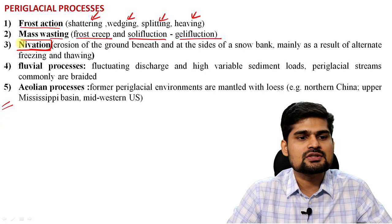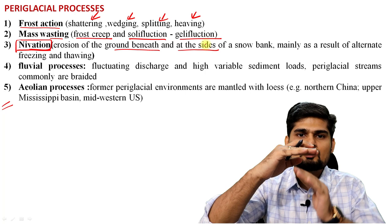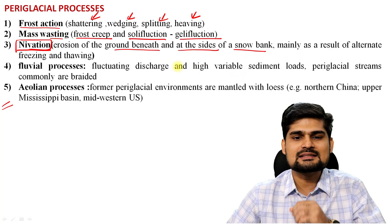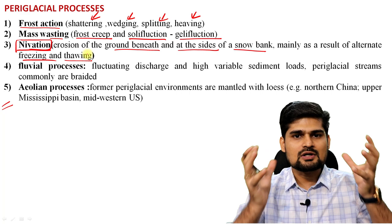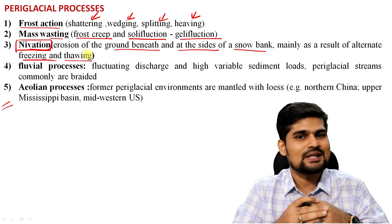The third process is nivation. Periglacial areas are particularly related to this nivation process. Nivation is the erosion of the ground beneath and at the sides of snow bank areas, mainly as a result of alternate freezing and thawing — contraction and expansion. This keeps happening, and so the adjoining areas are laterally as well as vertically eroded gradually. This is called nivation and is a most important characteristic of a periglacial zone.